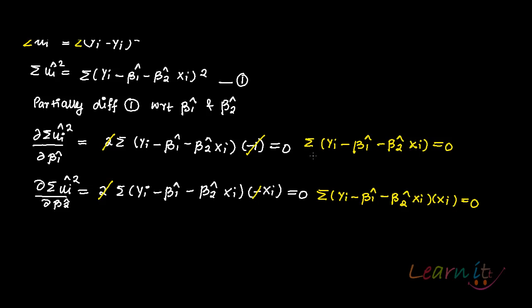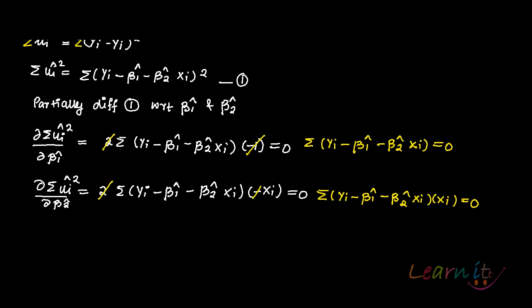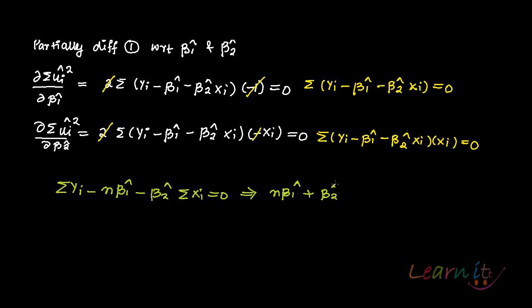If you put the summation sign in, for the first part you get: summation yi minus n·beta1-hat. Beta1-hat is a constant, so summing over n observations gives n·beta1-hat, and beta2-hat comes out of the summation sign. This gives us the first normal equation: n·beta1-hat plus beta2-hat·summation xi equals summation yi.